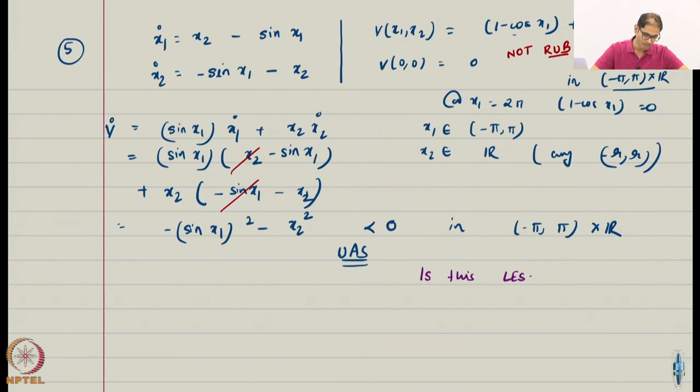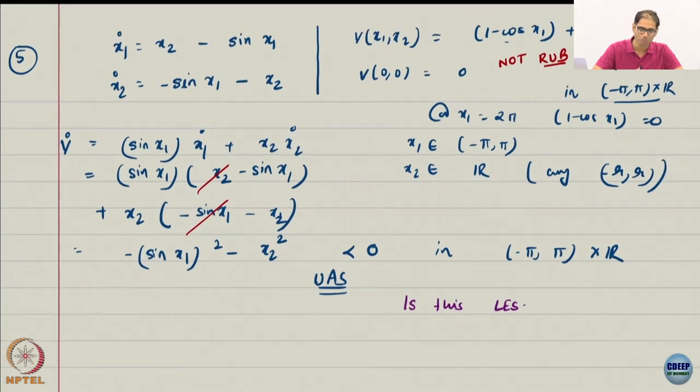If you see typically a pendulum will have dynamics x1 dot is x2, x2 dot is minus sin x1 minus x2. So it is a non-linear oscillator actually. But I have introduced this minus sin x1 because it will make my analysis simpler. Otherwise basically it becomes complicated to follow.